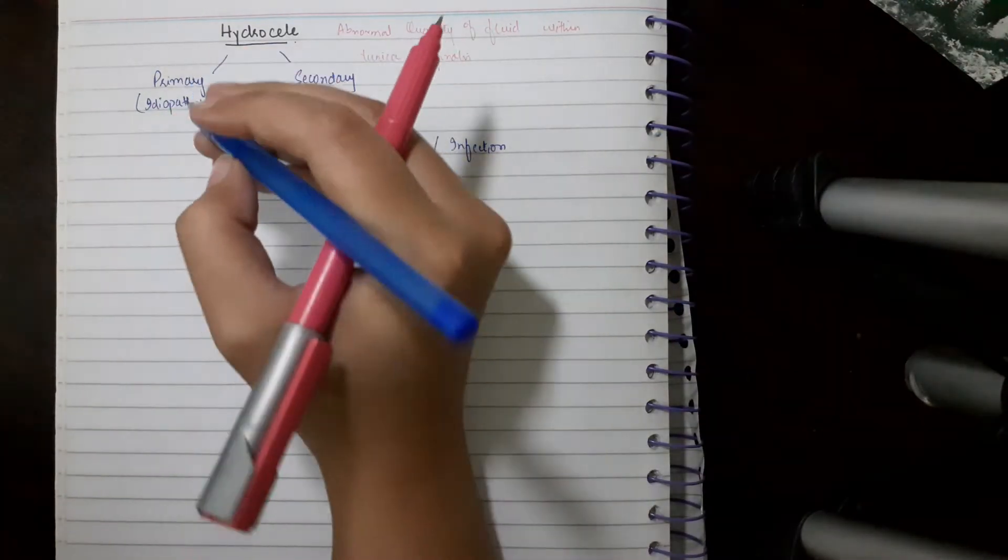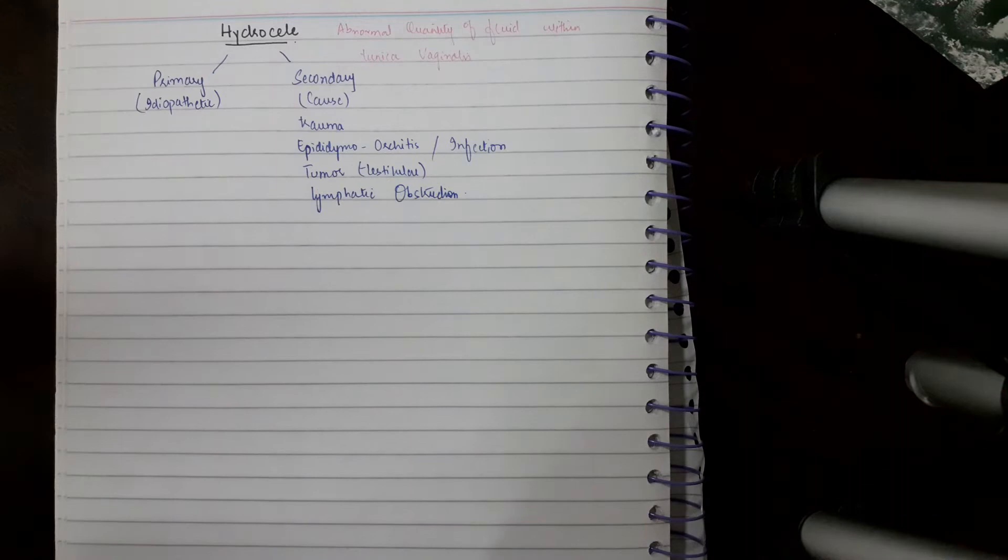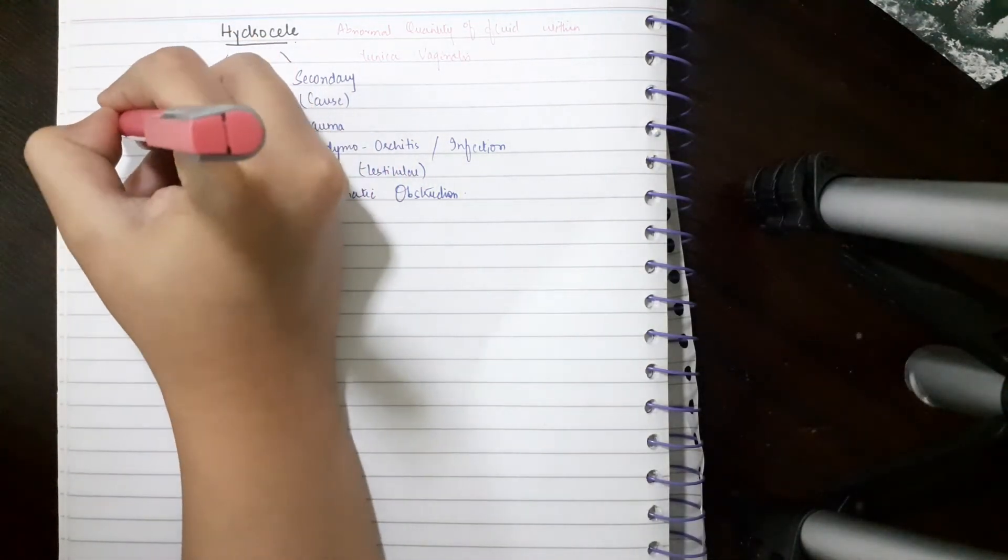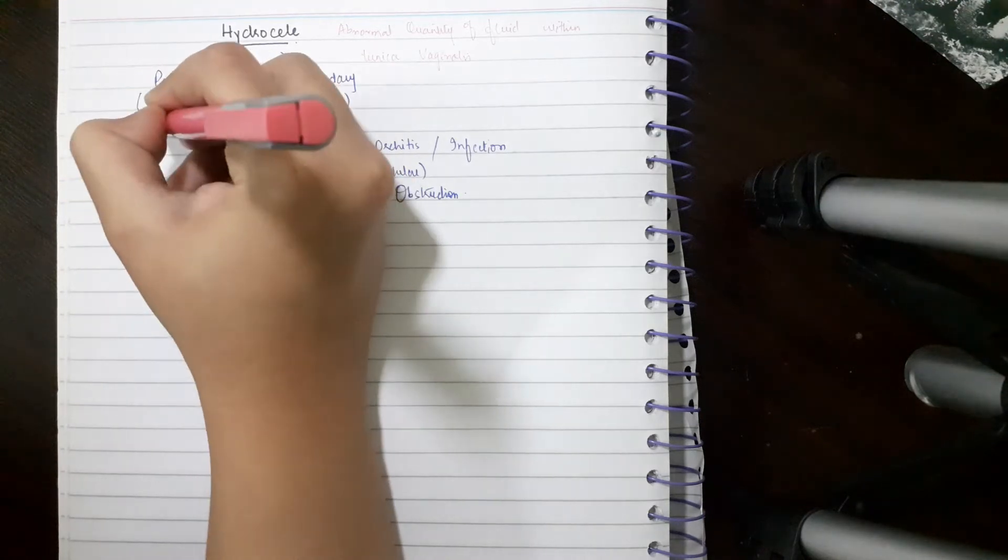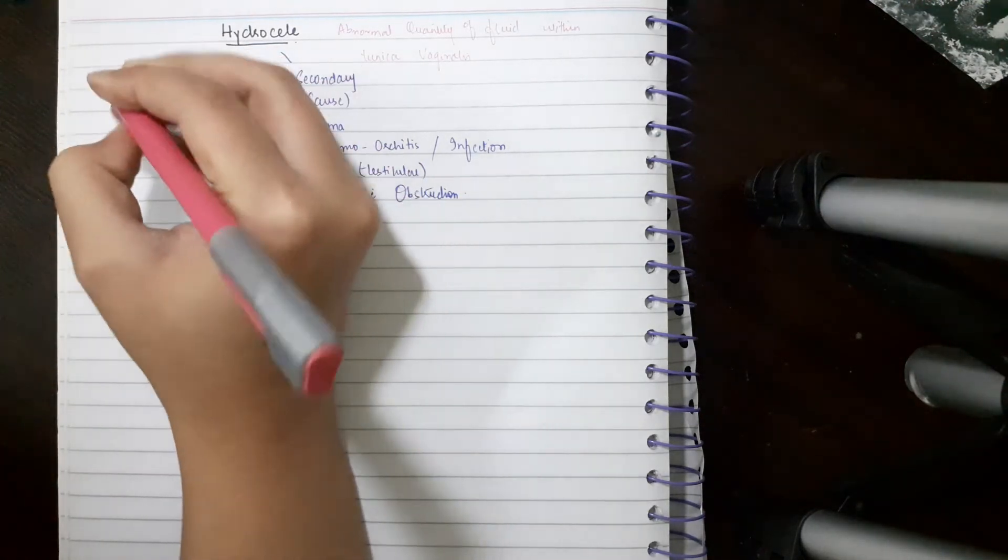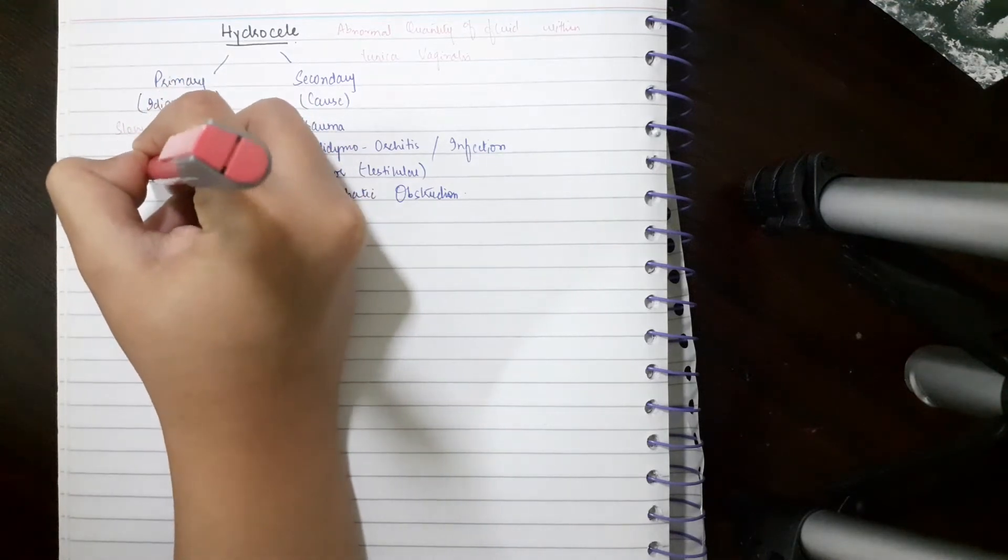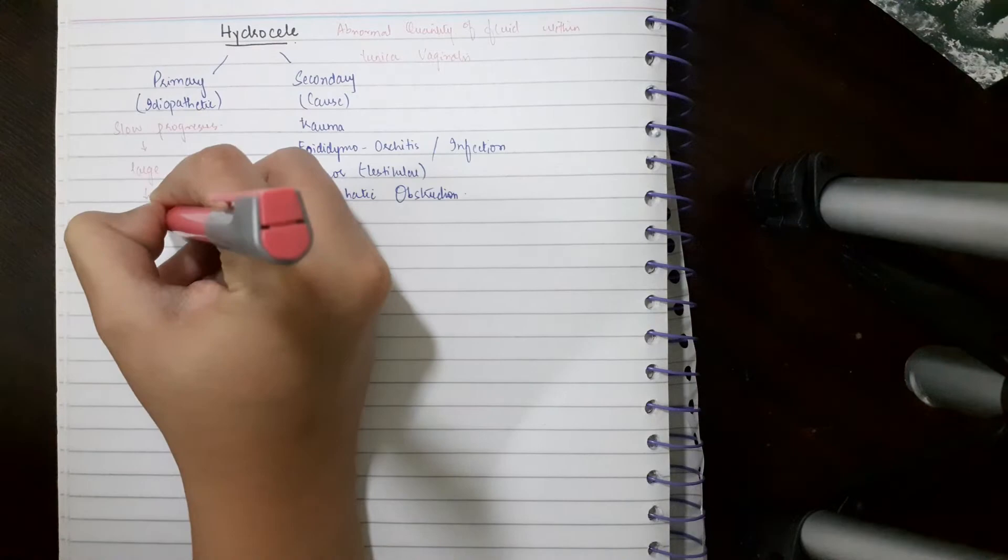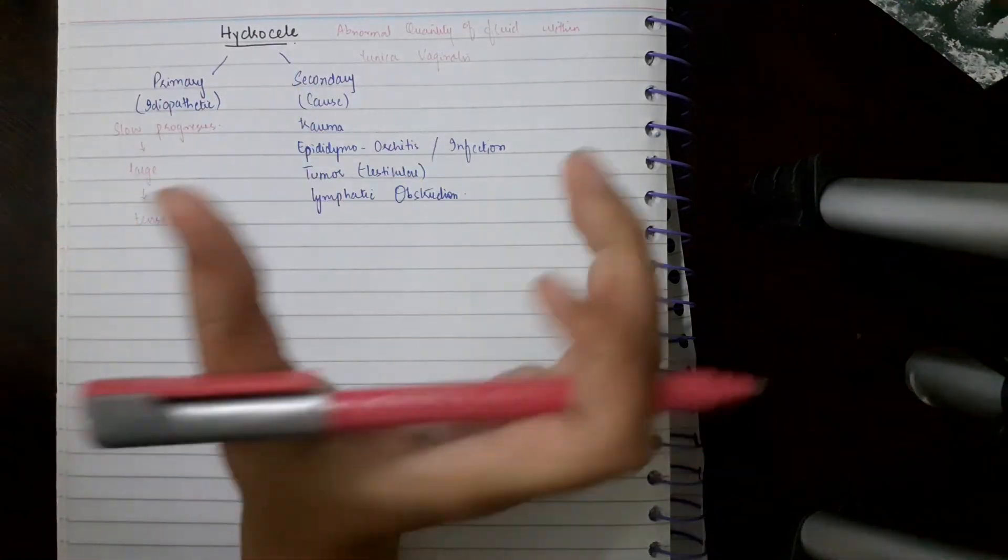Primary hydrocele is basically slow in development. It slowly progresses, and it is large in size and tense to touch. It's hard and firm to touch.